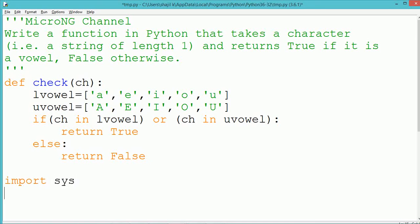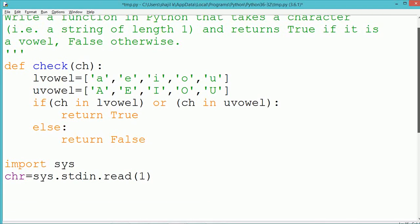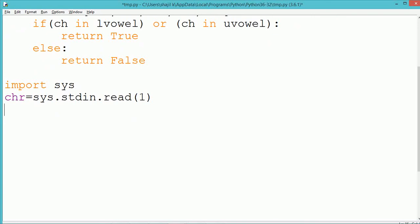To read a character from the user we are using the sys module. Inside the sys module we have an object which is named as stdin, standard input object. By using the object we call the method read. And inside the read we have mentioned how many number of characters to be read from the standard input. So if we are writing read of one it will read only one character from standard input which is the keyboard and stored into the variable chr.